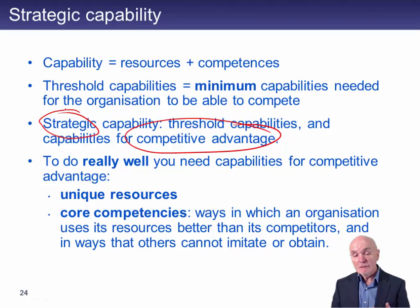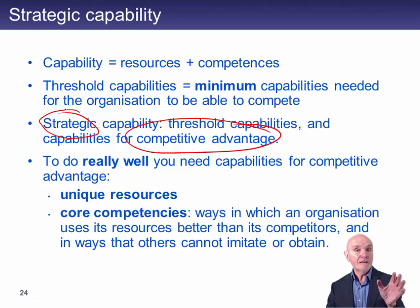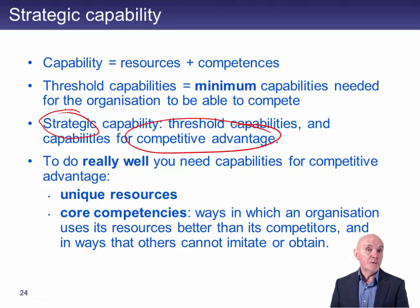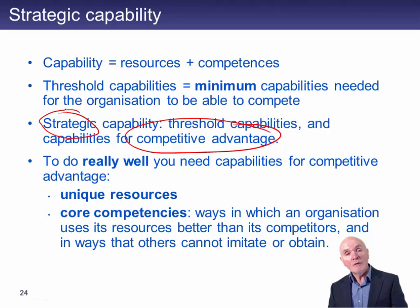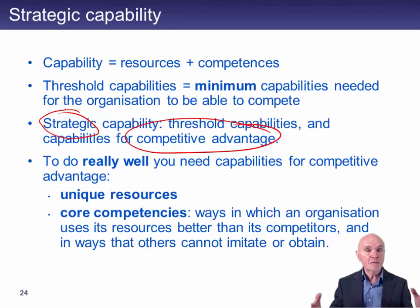However, unique resources require luck, because many companies do not have them. They produce ordinary products on ordinary machines. You can go and buy many non-current assets — IT equipment and so on — without restriction; they are not unique. In which case, you might need to rely on core competences: ways in which you have learned as an organisation to use your resources better than anybody else, even though everybody shares the same resources.